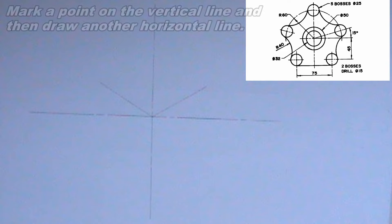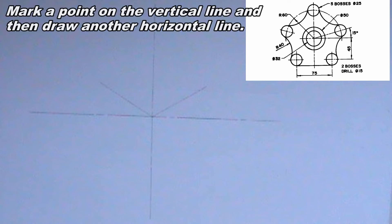Next, I will mark a point on the vertical line. The point should be 45 mm below the horizontal line, then I will draw another horizontal line.